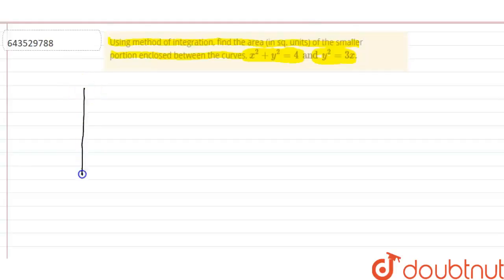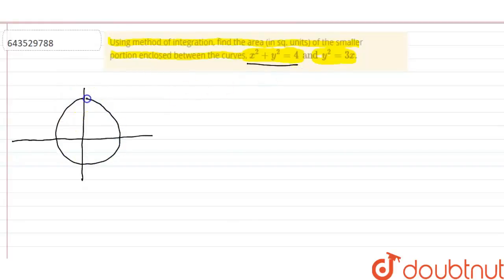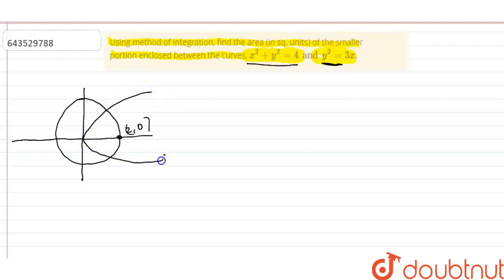So basically there are two curves. We will draw them roughly. The first curve is a circle of radius 2, centered at the origin, passing through (2, 0). The second curve is a parabola that is symmetric about the x-axis. We need to find the area enclosed between these two curves.